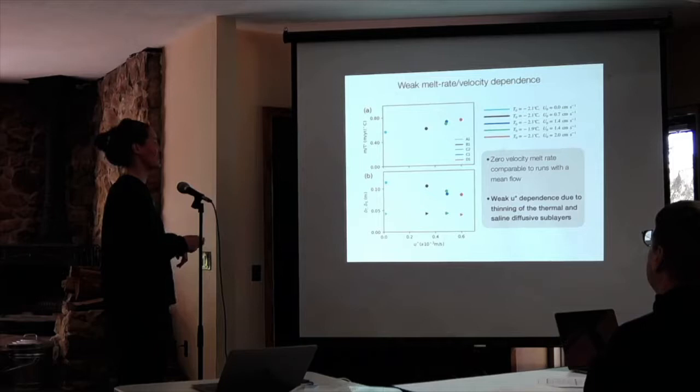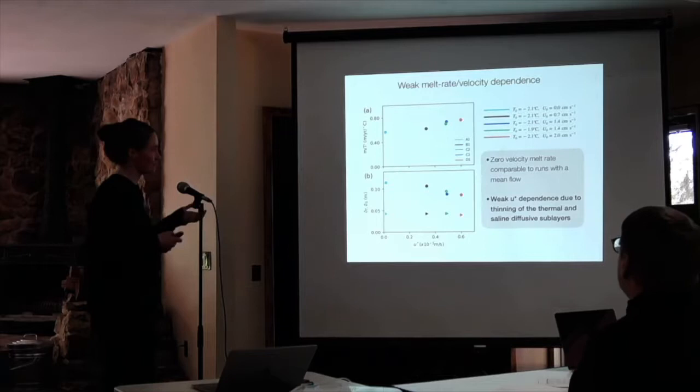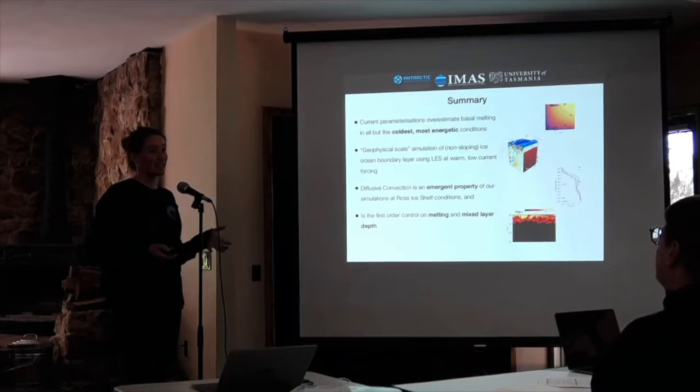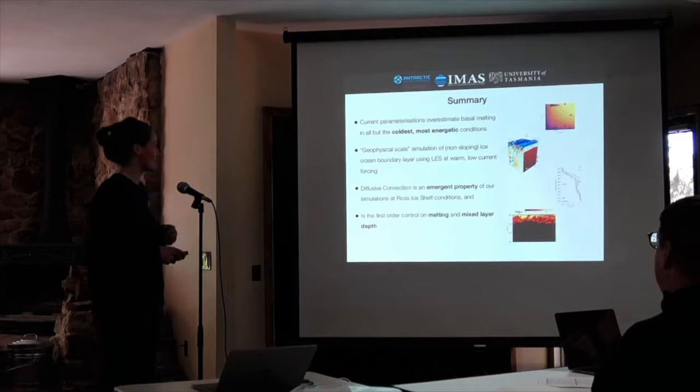This weak dependence on U-star can be understood in terms of the diffusive sublayer, which is thinning as we increase the velocity of the far-field flow. To summarize: our current parameterizations are overestimating basal melting in all but the coldest and most energetic conditions. This is a problem.